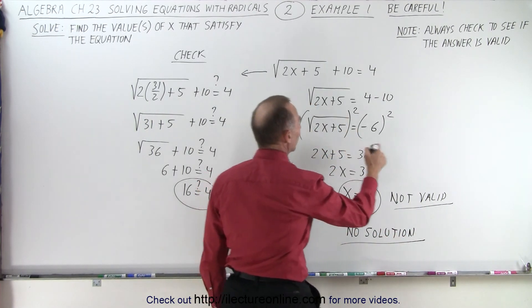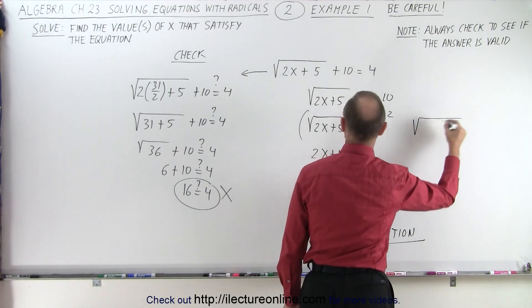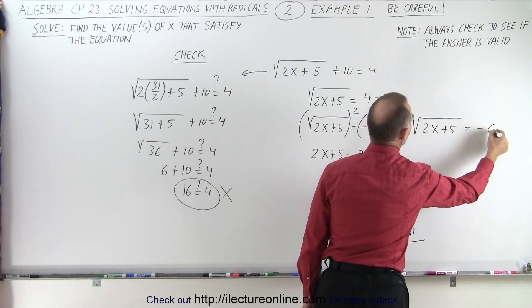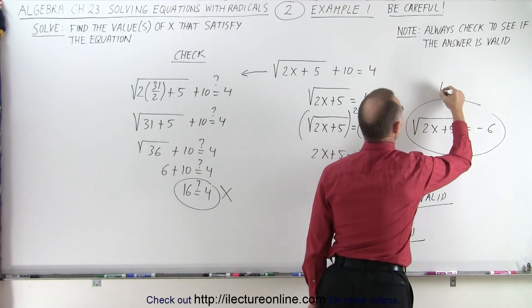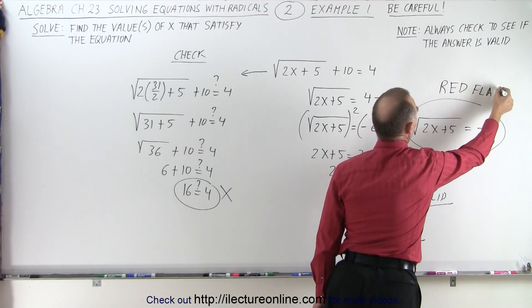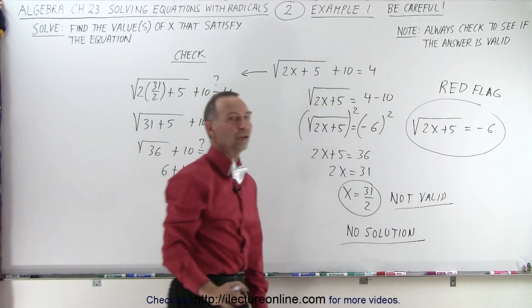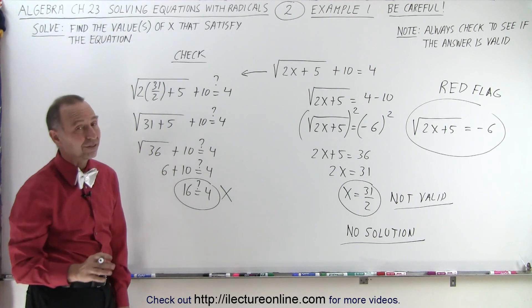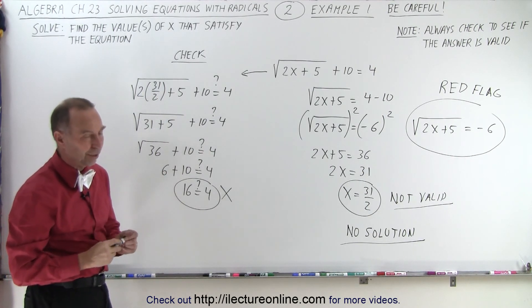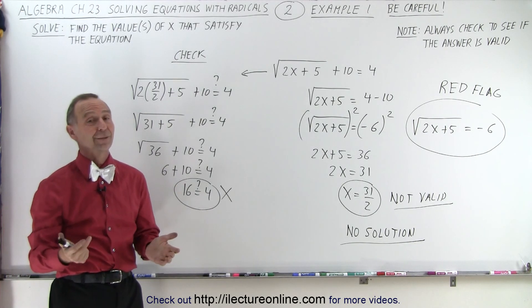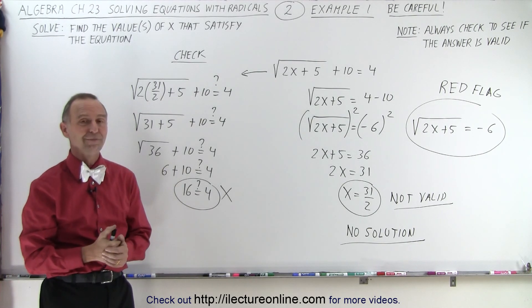Now, of course, over here, when we ended up with the square root of 2x plus 5 being equal to a negative number, there we go. That is a big red flag, as we call it, a warning that that is not possible. There's no such thing as the square root of a number being equal to negative 6, regardless of what that number is. Of course, unless we're dealing with imaginary numbers, but that's not the case over here. That is how it's done.